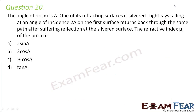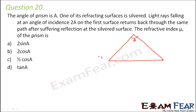Question number 20. The angle of prism is A. One of its refracting surfaces is silvered. Light rays falling at an angle of incidence 2A on the first surface return back through the same path after suffering reflection at the silvered surface. We need to find the refractive index mu of the prism. Let us draw a diagram: this is the prism, this is the angle A, this is the incident ray on the surface, this is the normal, and the angle of incidence is 2A.